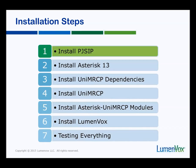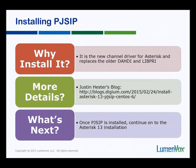Here are the installation steps we'll be running through. The first thing we're going to install is something called PJSIP — I'll describe what that is in a minute. Then we'll install Asterisk itself. Then there are various components that are part of the UniMRCP setup, which is often a confusing area where people run into problems, so I'll try to keep it straightforward. Following that is installing Lumenvox, and then we'll test everything to make sure it's all set up correctly.